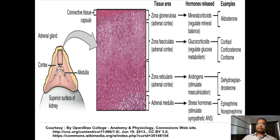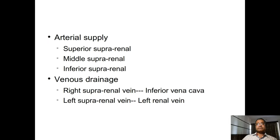The cells of the medulla have special staining properties. They stain brown with potassium bichromate, and therefore the cells of the medulla are known as chromaffin cells. This staining reaction is known as the chromaffin reaction.